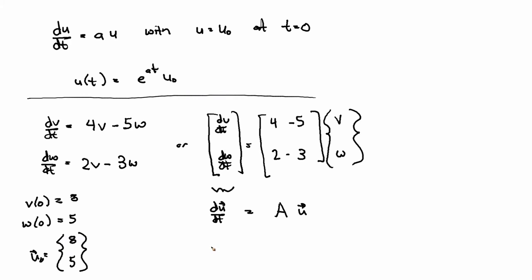Well, let's just guess and say that u is equal to e to the At, where A is a matrix now, times the vector u_0. That's it.